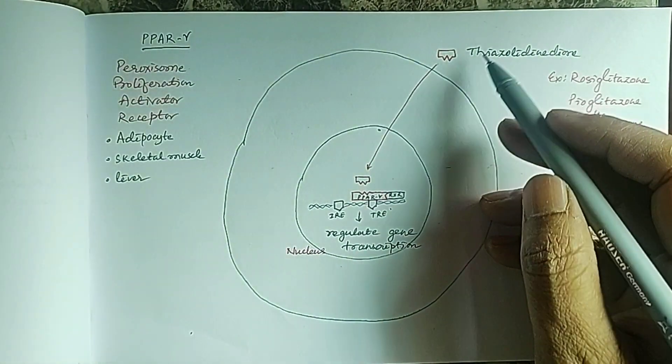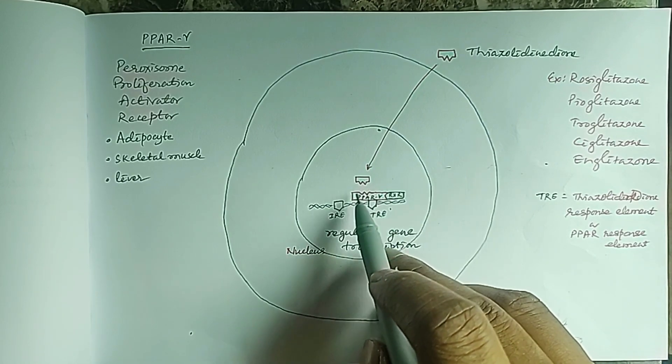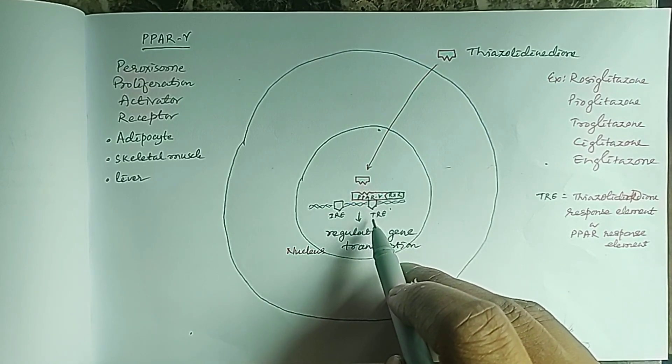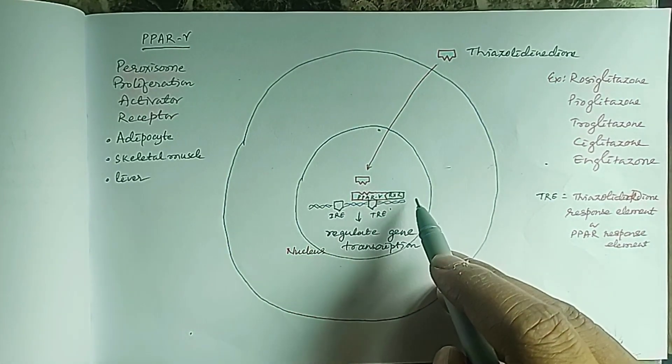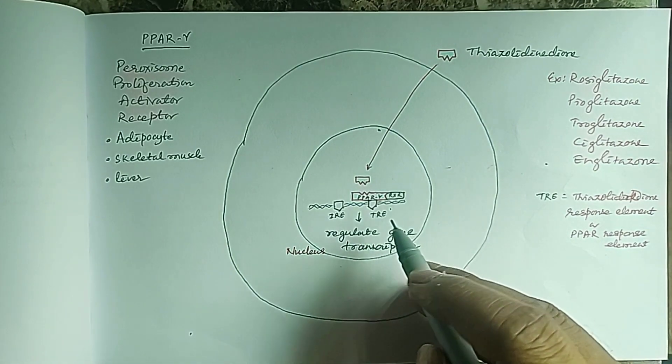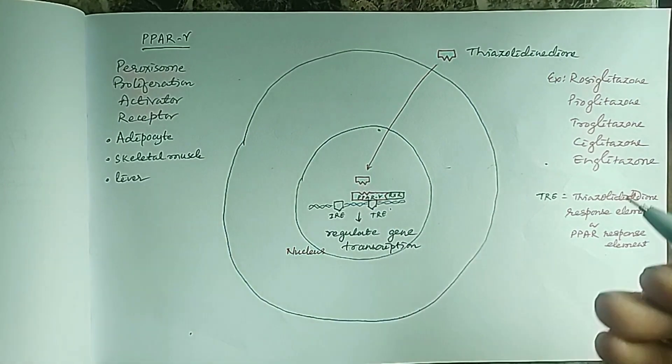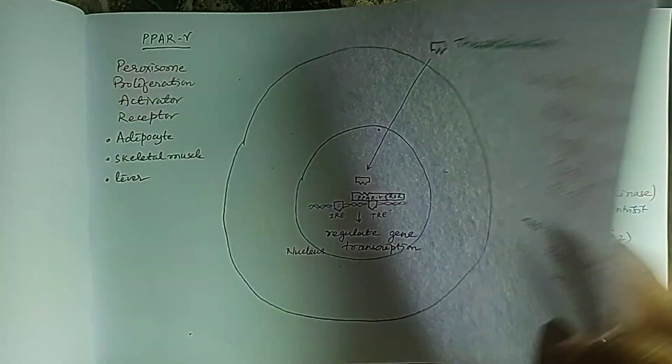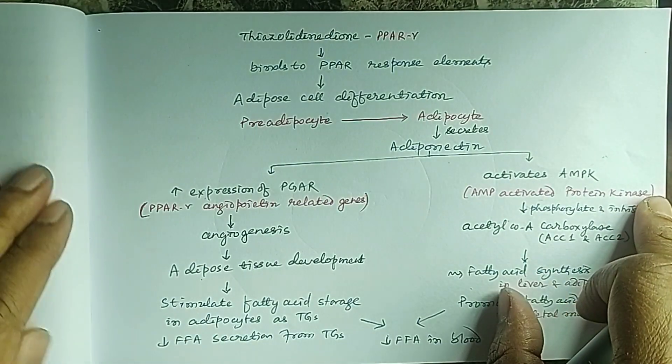Thiazolidinediones bind to the PPAR gamma and that complex will bind to the thiazolidinedione response elements or PPAR response elements in the DNA, which will regulate gene transcription. Messenger RNA will be produced, and from messenger RNA specific proteins will be produced.